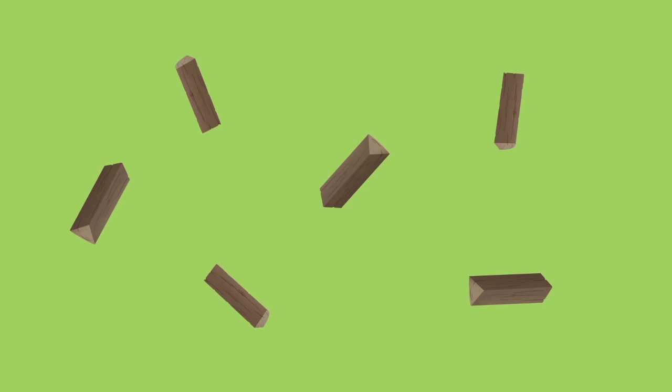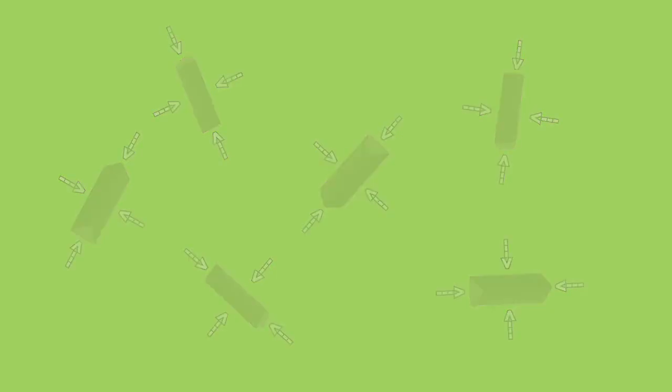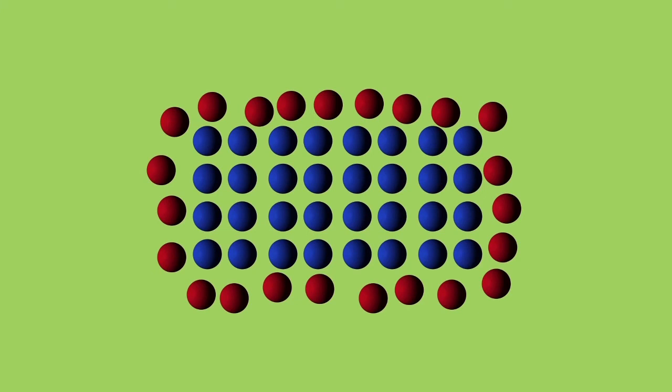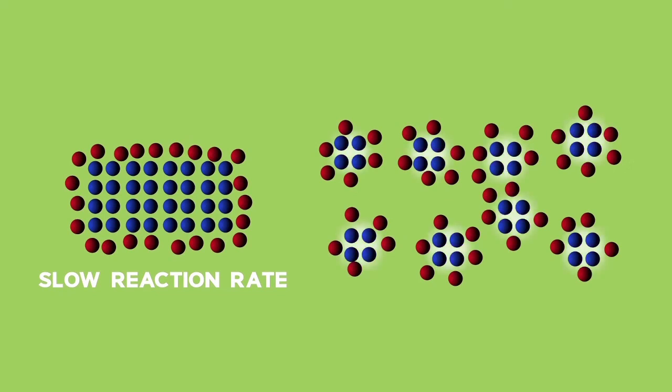When one of the reactants is a solid, the reaction can only take place at the surface of the solid. Breaking the solid into smaller pieces will increase the surface area exposed to the other reactant. This should increase the reaction rate. In the diagram, there are blue and red particles. If the blue particle is one solid, like a granule, it has a small surface area. The red particle, a possible acid, has fewer areas that touch the blue particles. Therefore, a slow reaction rate. In the example on the right, the blue particles are made smaller by breaking up the solid thereby increasing the surface area. So there is more area in contact with the red particles and thereby increasing the rate of reaction.